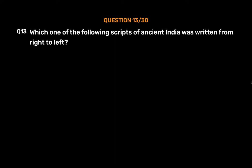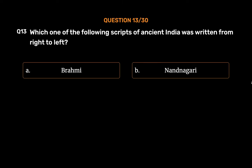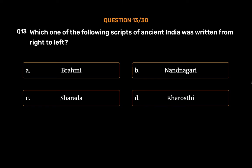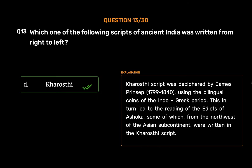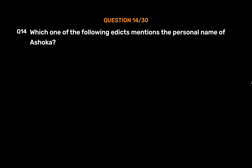Question number thirteen: Which one of the following scripts of ancient India was written from right to left? Option A: Brahmi, Option B: Nandanagari, Option C: Sharada, Option D: Kharosthi. The correct answer is Option D, Kharosthi. Kharosthi script was deciphered by James Prinsep (1799–1840) using the bilingual coins of the Indo-Greek period, which in turn led to the reading of the edicts of Ashoka, some written in Kharosthi from the northwest of the Indian subcontinent.